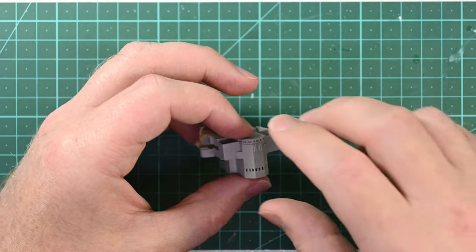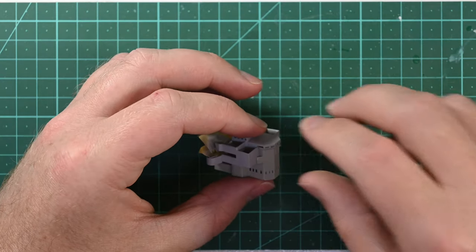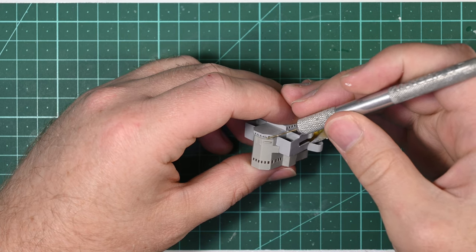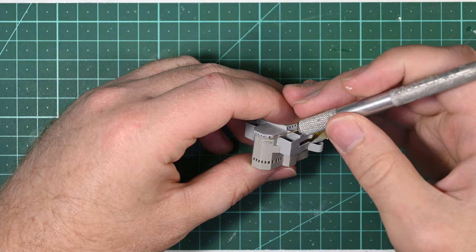To glue these components together I use Tamiya Extra Thin Plastic Cement. After giving the plastic cement a short time to dry I then work on filling the gaps below the compass platform windows.